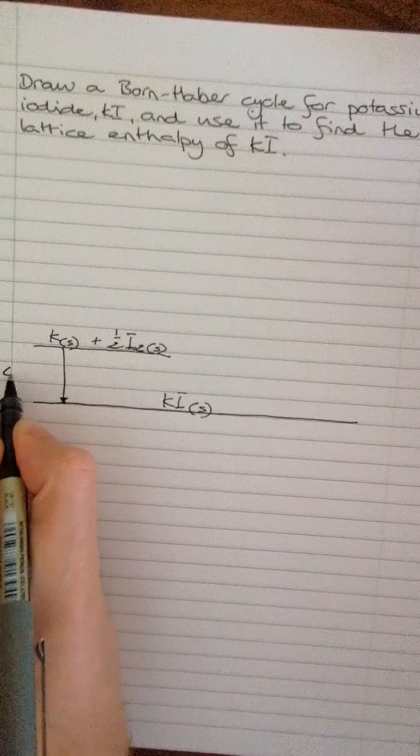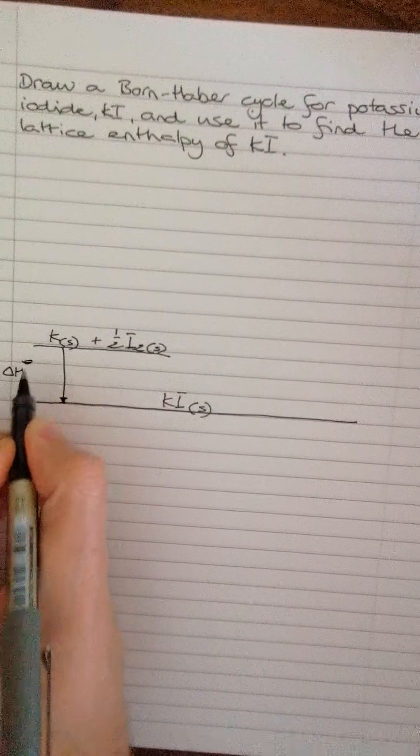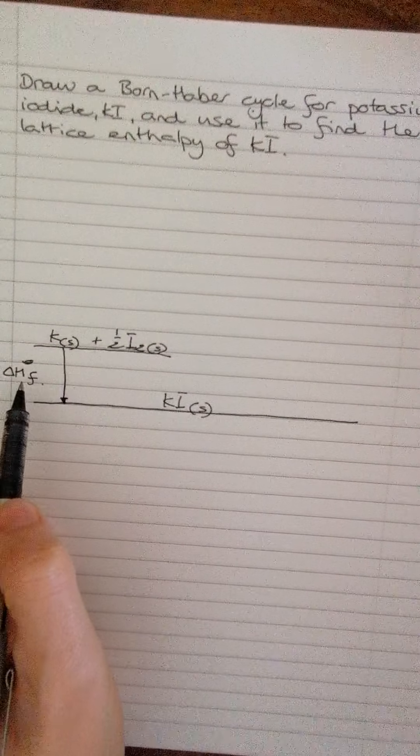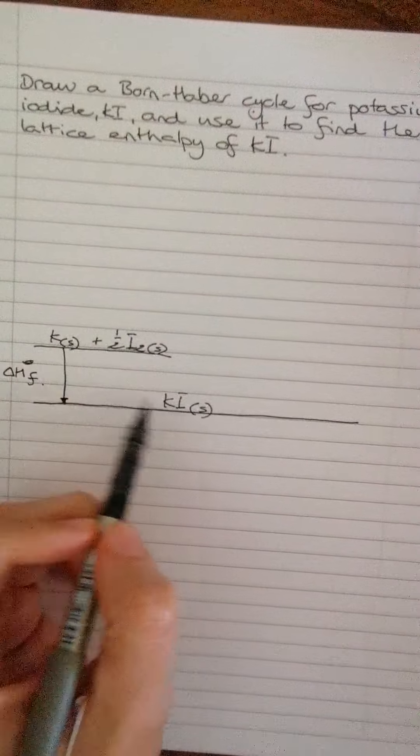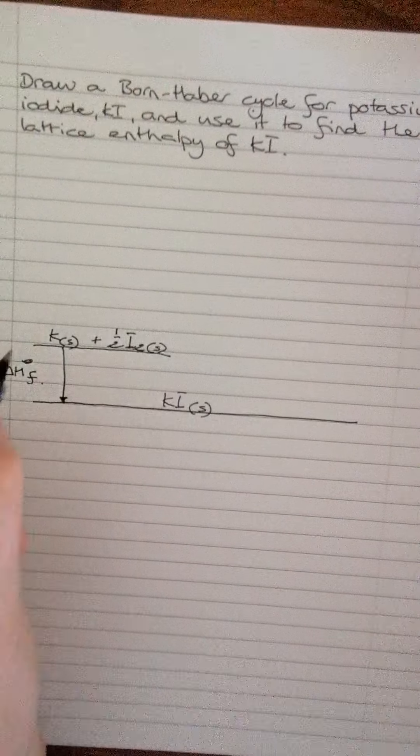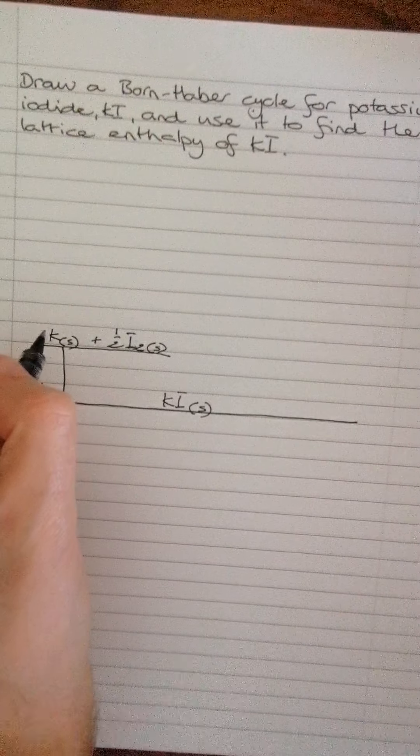So this is the enthalpy change of formation. If you remember the definition, enthalpy change of formation for potassium iodide is to form one mole of the potassium iodide from the elements in their standard states. Okay, so we're going to build up the other side of the cycle now.